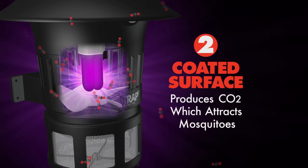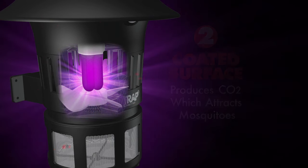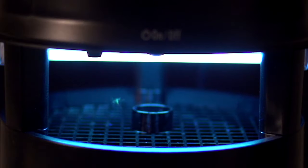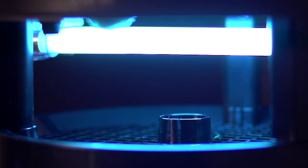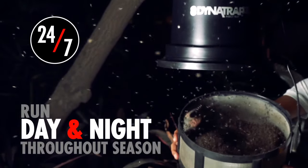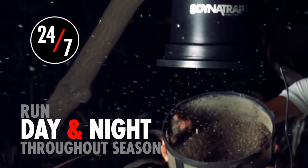When insects approach, Dynatrap's quiet, powerful vacuum fan pulls them into the retaining cage, where they dehydrate and die. Let Dynatrap run continuously day and night throughout the season to take care of existing pests and break their life cycle.